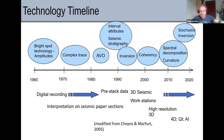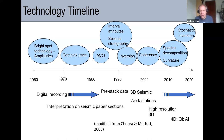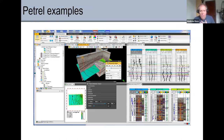Doing anything quantitative on non-true-amplitude data is going to be difficult. If you have legacy data from 2000 that hasn't been reprocessed, it's probably not going to be true amplitude, so be careful about trying to calculate porosity or anything quantitative from it. What I'm going to try to do is show you examples of the things we talk about in Petrel. There are some things not in Petrel — some of the newest things haven't been implemented yet.